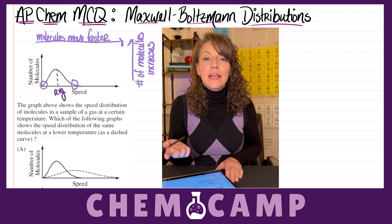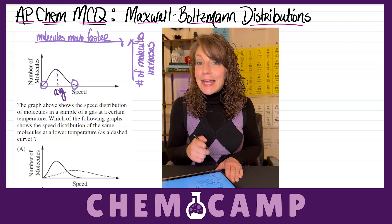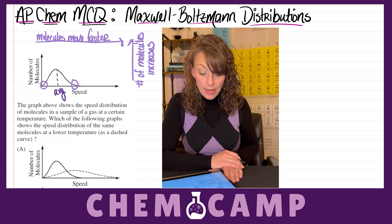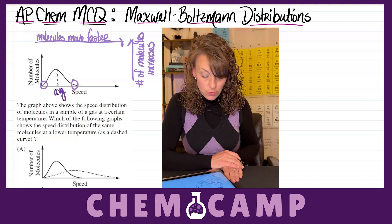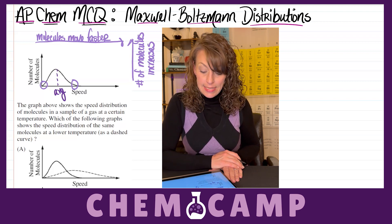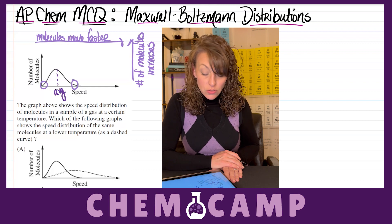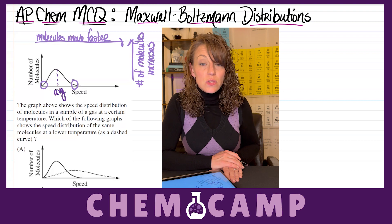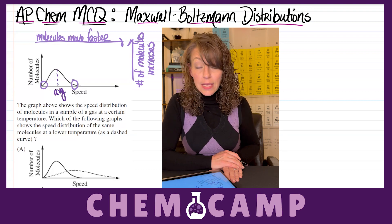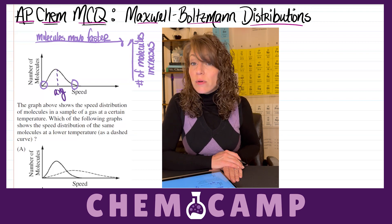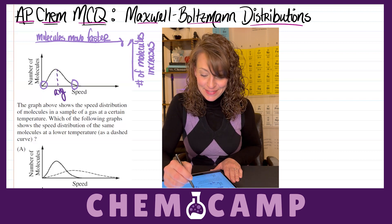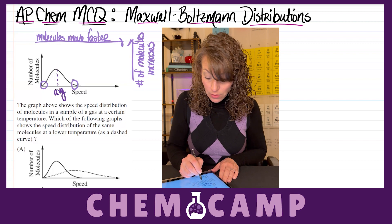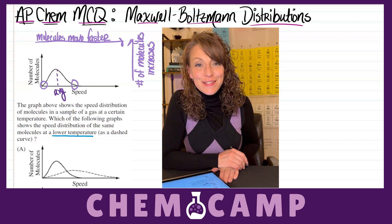Now let's take a look at exactly what it is they're asking us about this curve. They tell you that the graph shows the speed distribution of molecules in a sample of gas at a certain temperature, and which of the following graphs shows the speed distribution of the same molecules at a lower temperature as a dashed curve. We need to focus in on the lower temperature part of this question.